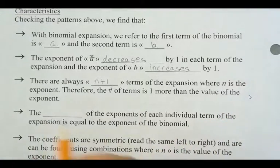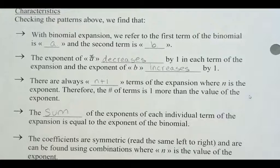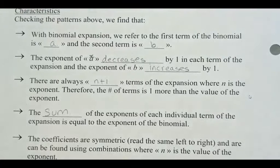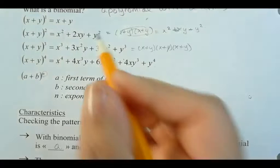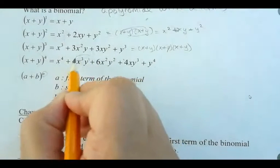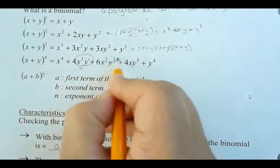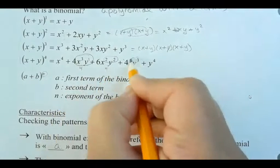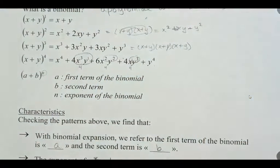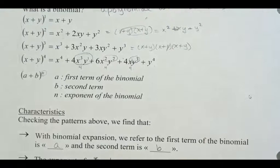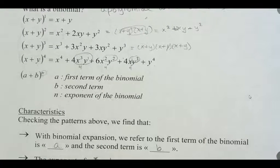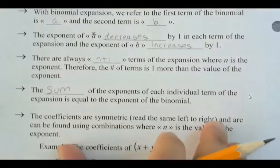Now, the sum of the exponents, if we look at the sum of the exponents of each individual term, it's always going to be equal to the exponent of the binomial. So I'm going to slide back up. What can you tell me is the sum of these two exponents? Four. What's the sum of these two? What's the sum of these two? Okay, so it always adds up to four. So we could tell the exponent on it by just adding them up.